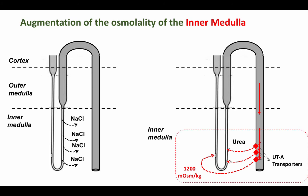Urea is normally kept within the tubules by a low urea permeability. However, the deep inner medullary collecting ducts are more permeable to urea because of the presence of urea transporters such as the recently cloned UT-A1 transporter.